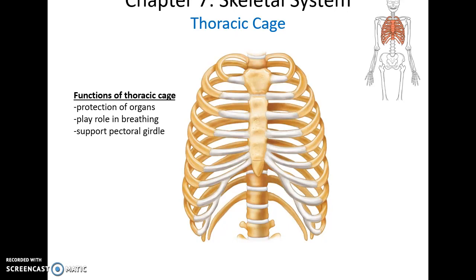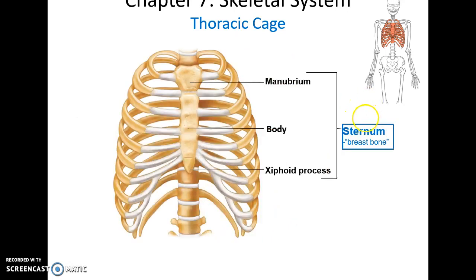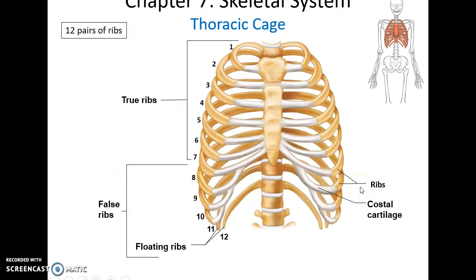The thoracic cage helps form the thoracic cavity, protecting many organs within it. It plays a role in breathing because it can expand, and also supports the pectoral girdle. The sternum, or breastbone, comes in three parts: the superior manubrium, the middle body, and the inferior xiphoid process. There are 12 pairs of ribs.